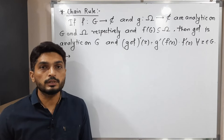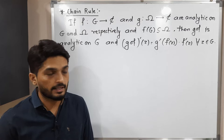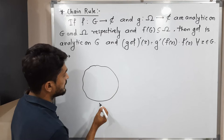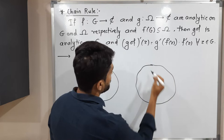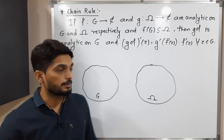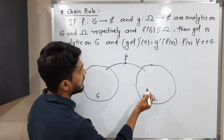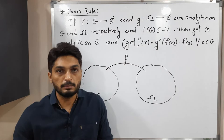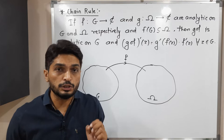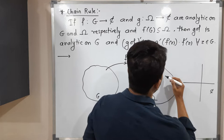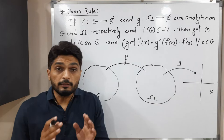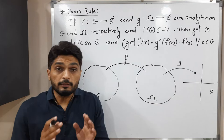Let us discuss the chain rule. We have two subsets G and Omega of C. G is a subset of C, and Omega is also a subset of C. F is a function from G to C such that F(G) is a subset of Omega — that means the image of G under F is a subset of Omega. We have a second function G defined on Omega, from Omega to C. Given that F and G are both analytic functions, we have to prove that their composition G∘F is again analytic.